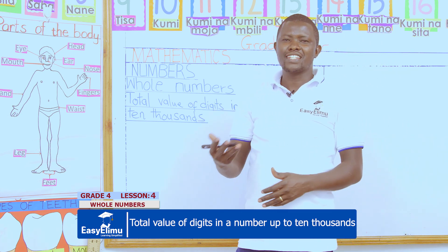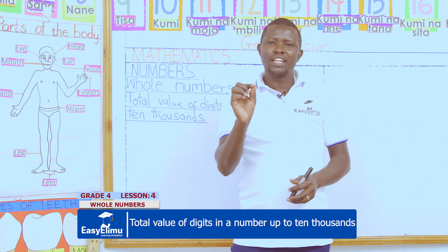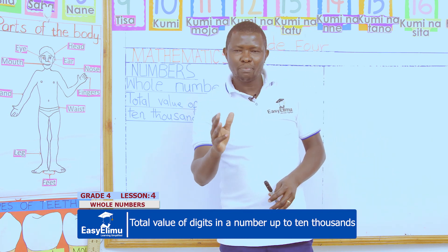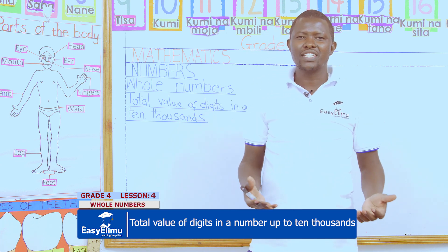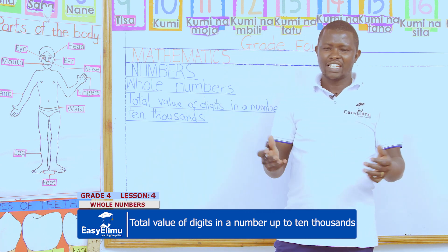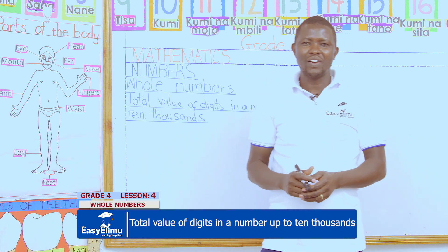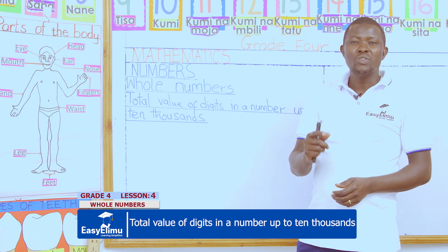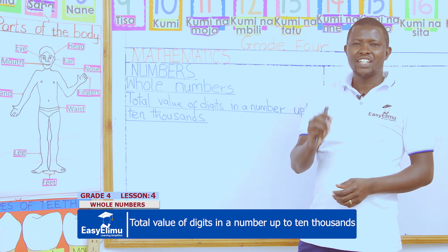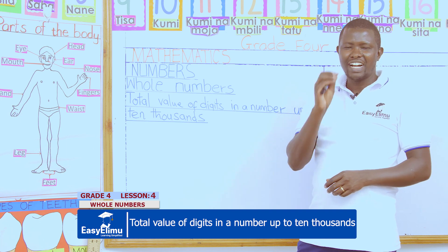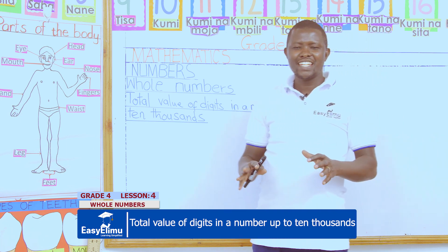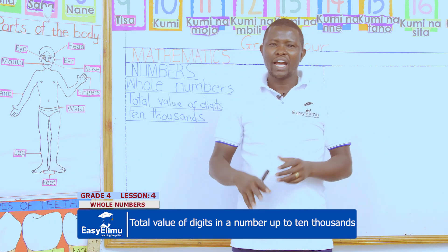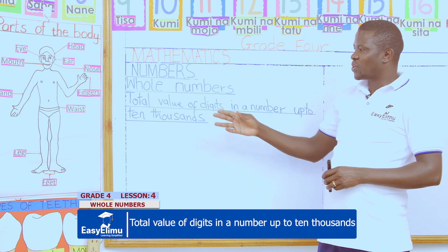To start, in our previous lessons we had learned what the total value is. Can you remind yourself what the total value is? I would request John to give us an answer. What is the total value? Total value is the amount of value attached to a digit. And from Victoria and her group, what did we say we can arrive at when we are looking at the total value?